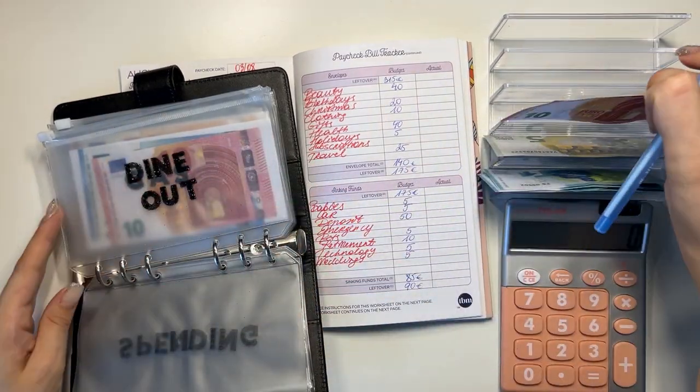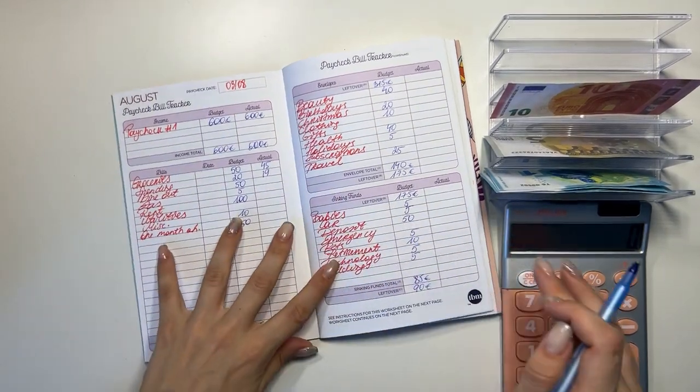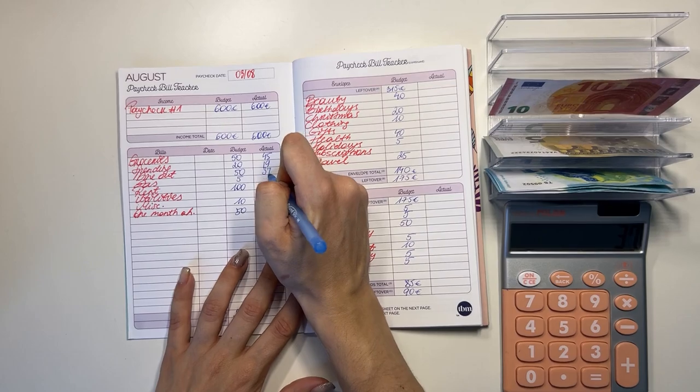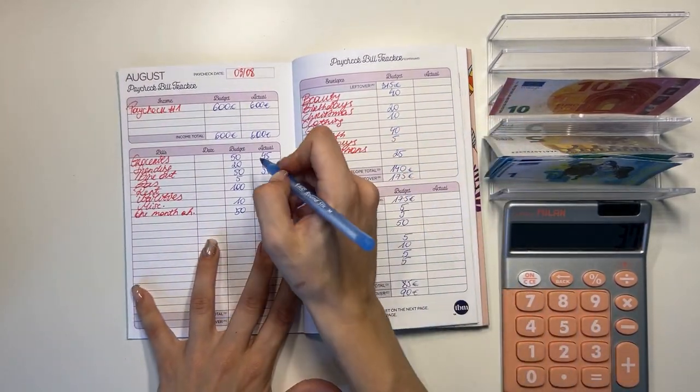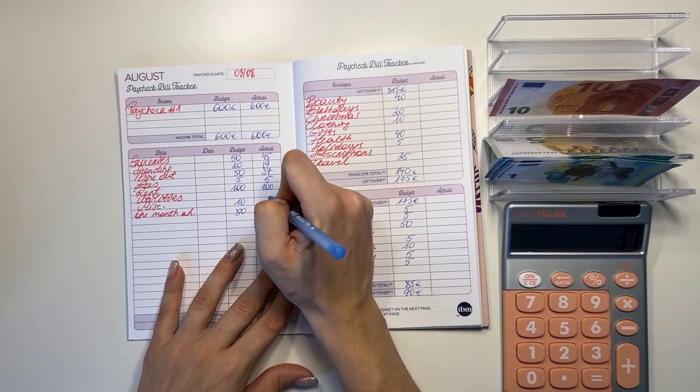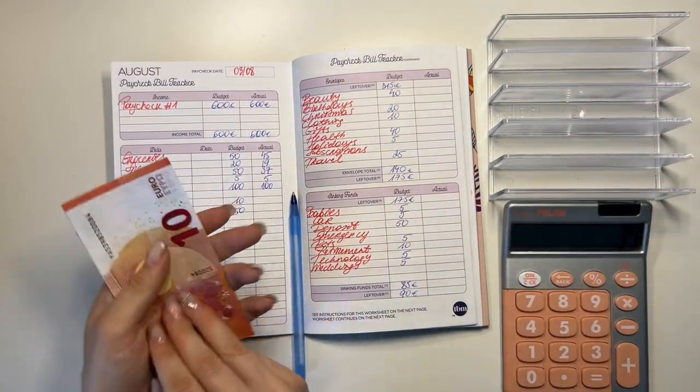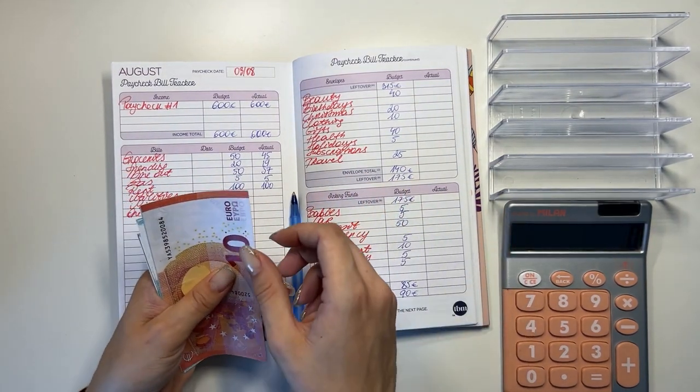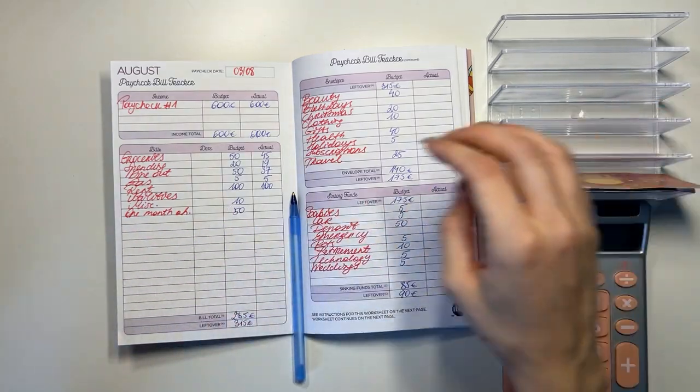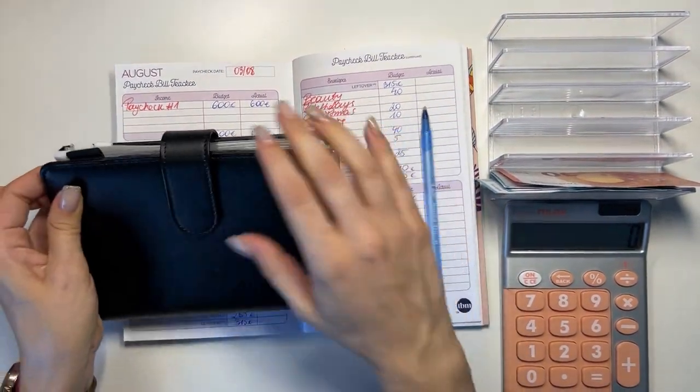Dine out had rollover of 10, 11, 12, and 13, so that means we spent 37, perfect. Okay, so five went into gas, 100 went into rent, nothing in utilities, and miscellaneous we put a 10 in plus the ones that we have here are rollover. So 10 plus 19 is 29.